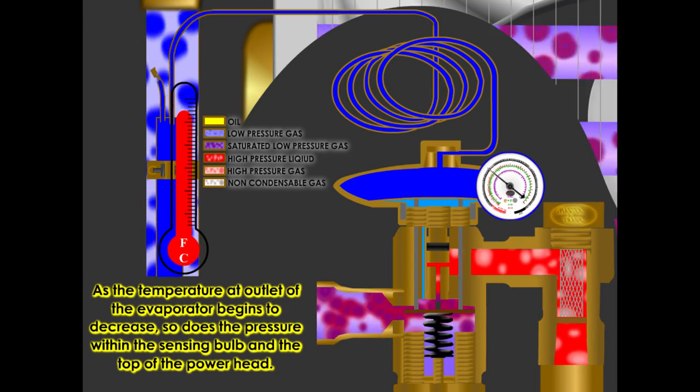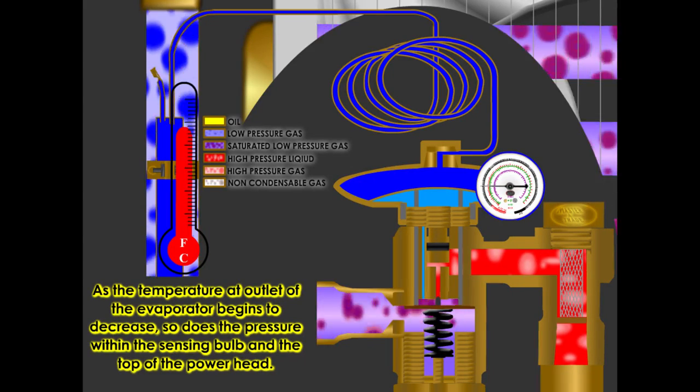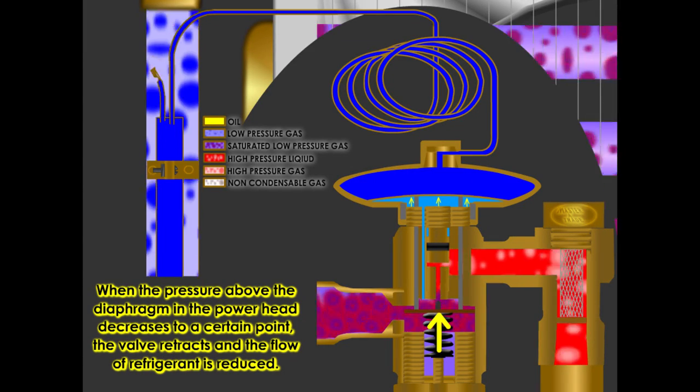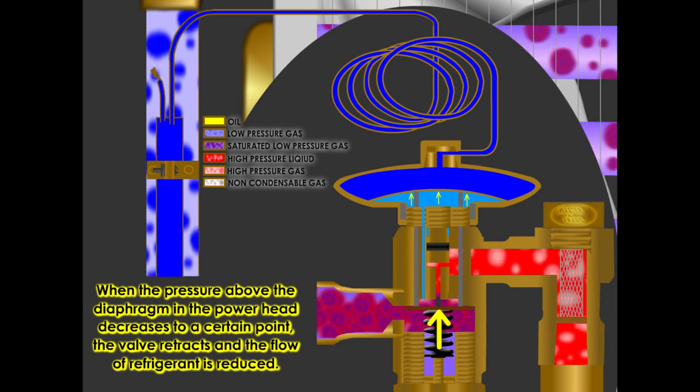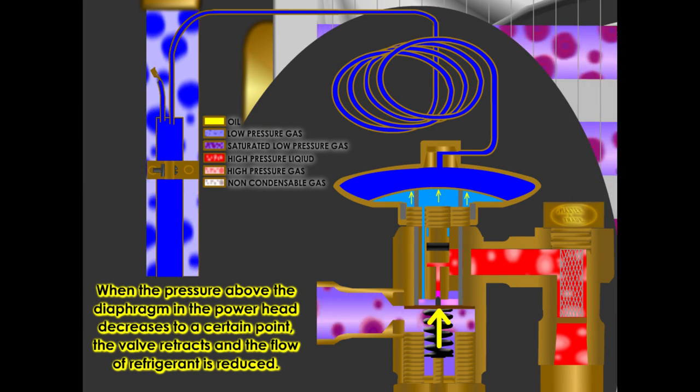As the temperature at the outlet of the evaporator begins to decrease, so does the pressure within the sensing bulb and the top of the power head. When the pressure above the diaphragm in the power head decreases to a certain point, the valve retracts and the flow of refrigerant is reduced.